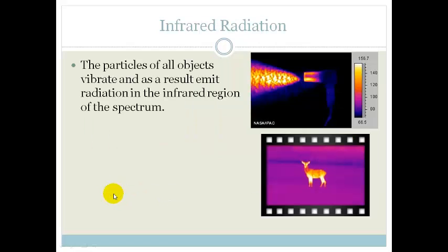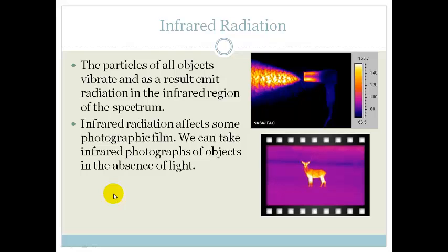Next we get infrared radiation. Infrared radiation comes from basically all objects that give off heat. The particles of all objects vibrate and as a result they emit radiation in the infrared region of the spectrum. Even though we can't see it with the naked eye, it can be seen through some photographic film and we can take infrared pictures of objects in the absence of light — for example, a deer visible at night through infrared imaging.